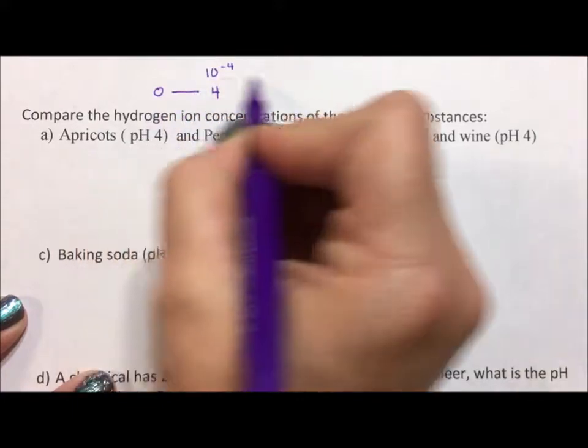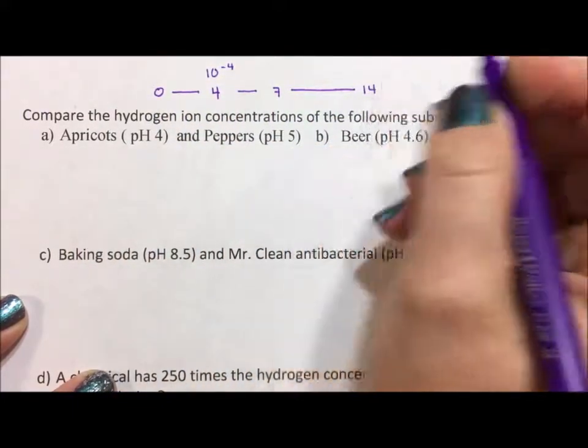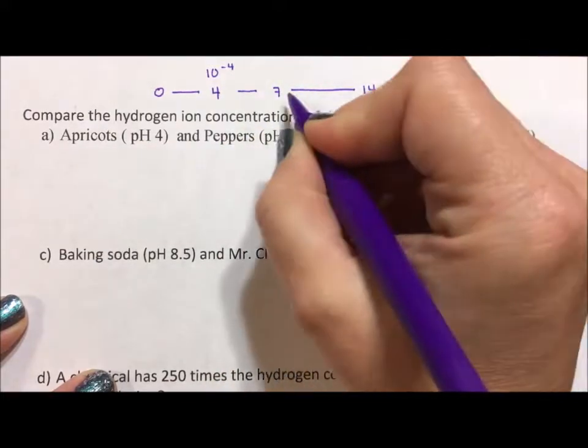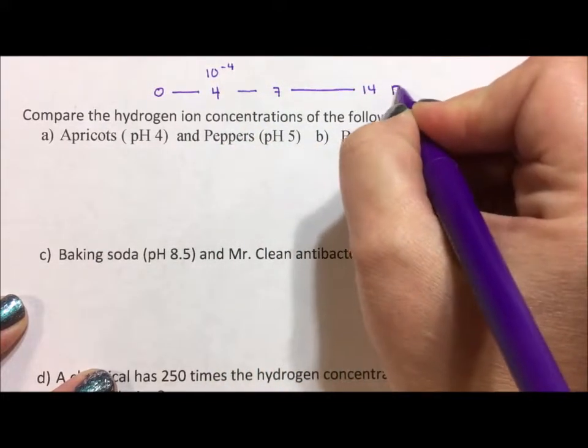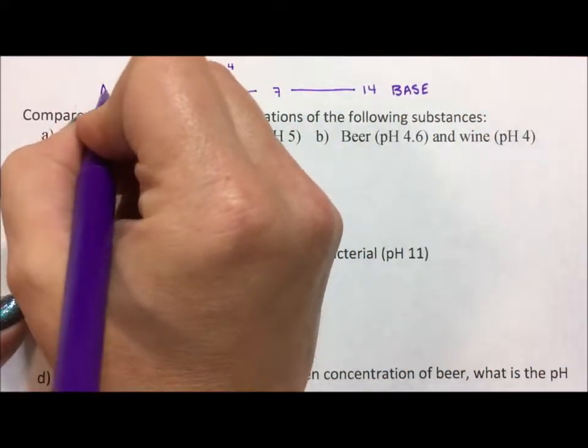pH scale goes from 0 up through 14 where 7 is neutral. Anything greater than 7 is a base and anything less than 7 is an acid.